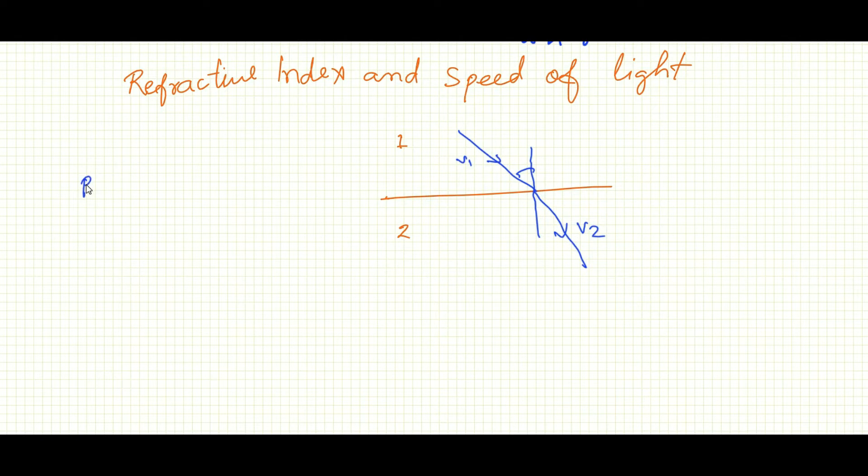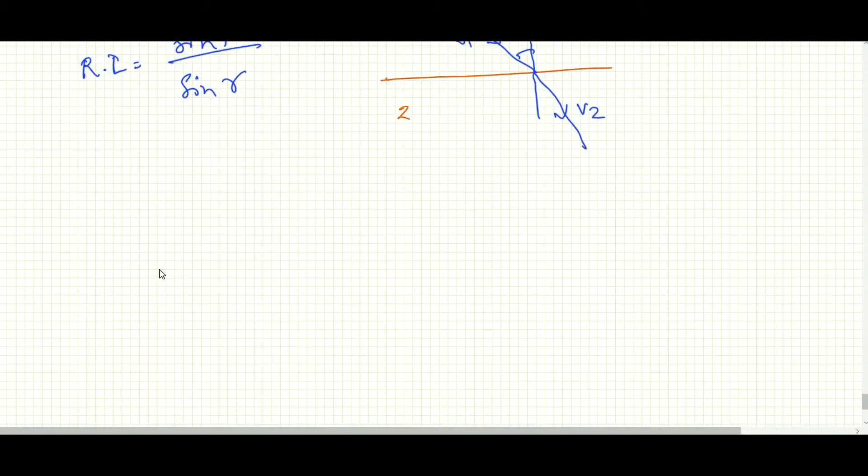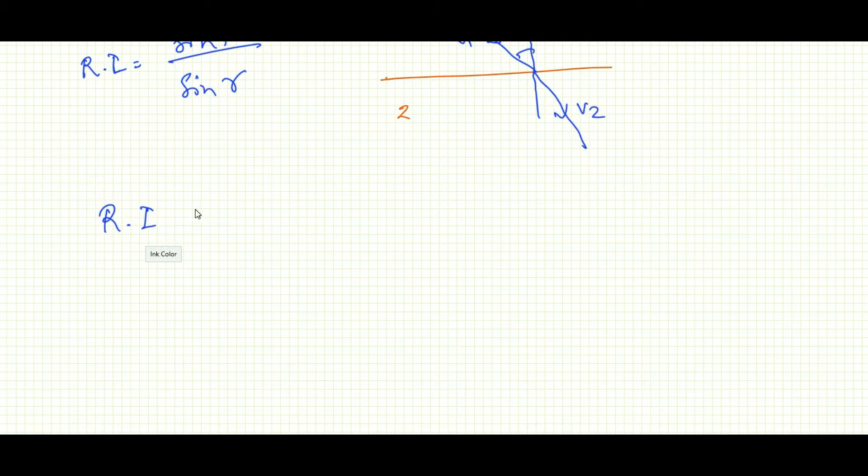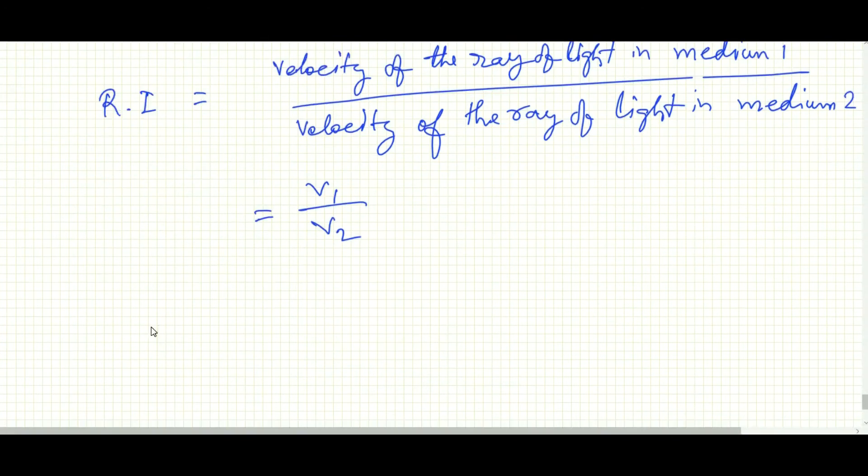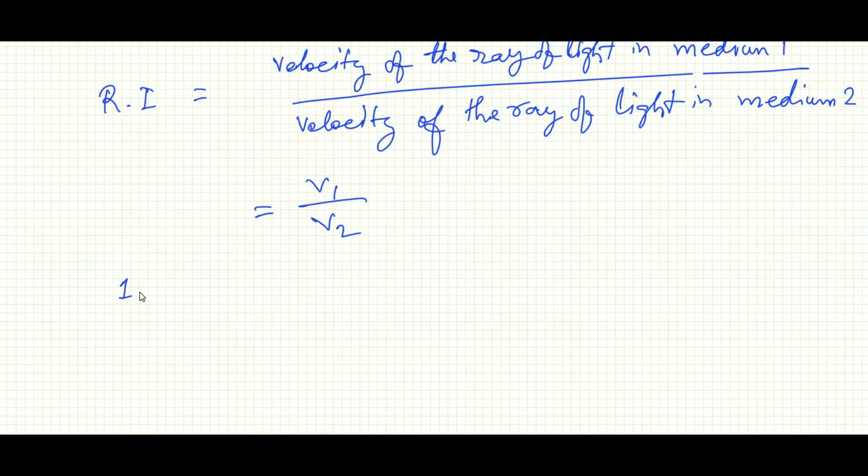So it is the ratio of the sine of angle of incidence to the sine of angle of refraction. As the velocity also changes, that means the refraction takes place due to the change of the velocity from medium 1 to medium 2. Therefore refractive index can also be written as the ratio of the velocities of the ray of light into medium, that means the velocity of ray of light in medium 1. This can also be written as equal to V1 by V2. The refractive index can be written as 1 mu 2 equal to V1 by V2, so this is the refractive index of medium 2 with respect to medium 1.